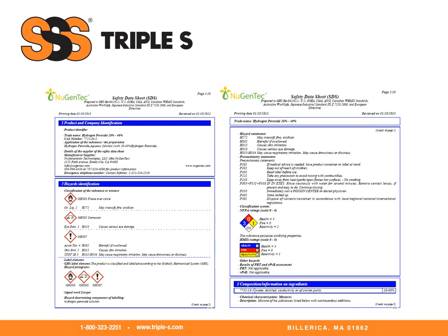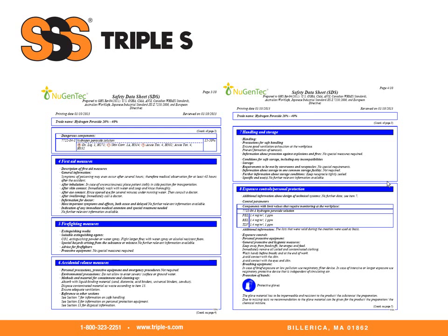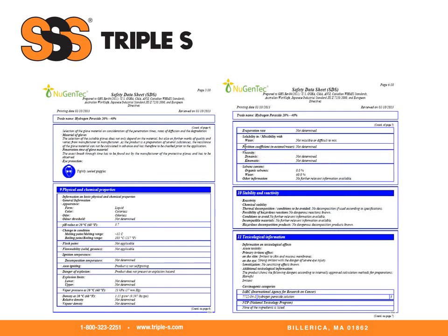Section three, information on ingredients — we see that the product is from 10 to 60% water. Continuing with ingredient information, we see that it contains hydrogen peroxide solution along with the CAS number and the percentages. Section four gives us the first aid measures, section five the firefighting measures, section six the accidental release measures. Section seven shows the proper handling and storage of the product. Section eight gives us the exposure controls and personal protection — note the components with the limiting values and the personal protective equipment required.